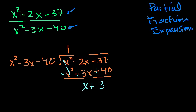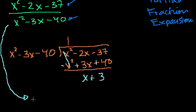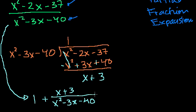So this expression up here can be rewritten as 1 plus x plus 3 over x squared minus 3x minus 40. And it's important to keep this, might seem like some type of magic thing I just did, but this is no different than what you did in the fourth or fifth grade where you learned how to convert improper regular fractions into mixed numbers.